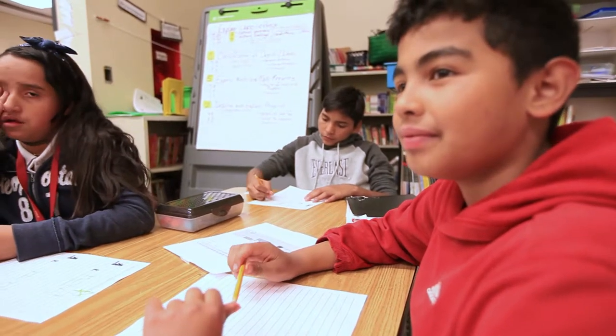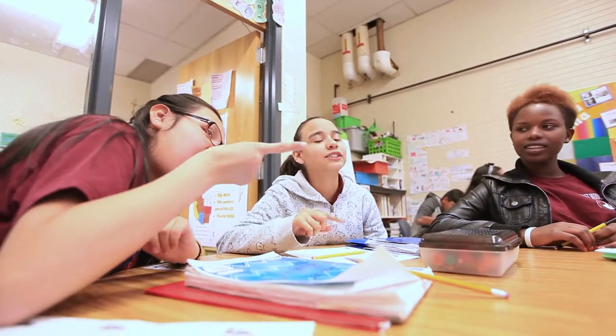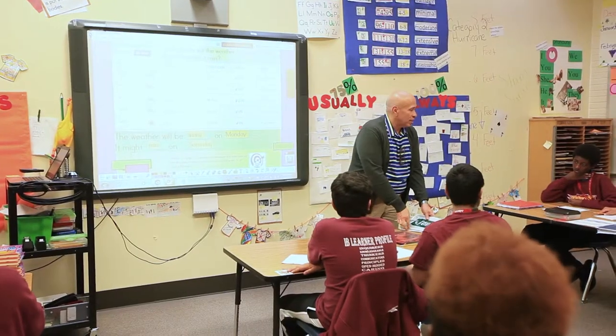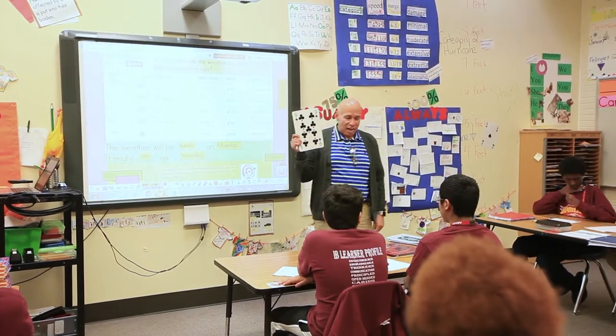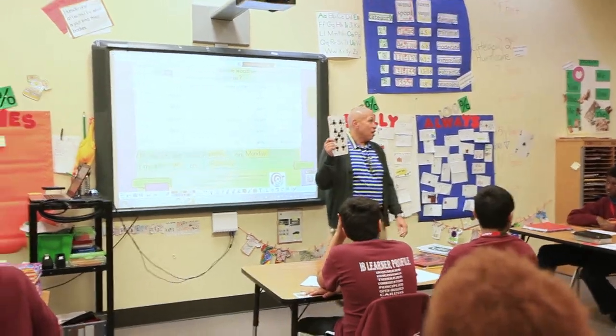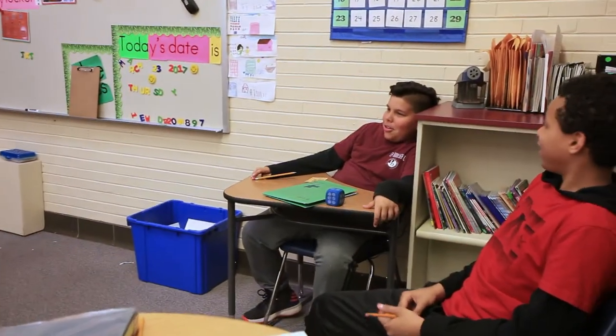It might rain on Saturday. Numbered Heads Talking is the name of a structured language practice where students get the opportunity to talk amongst themselves about the topic or the question. Then they know we're going to come back together and give a response — one person from the table. Let's see who's going to be responsible for talking right now. The nine. You are the nine. Go, Diego. The weather will be sunny on Monday. It might rain on Saturday.